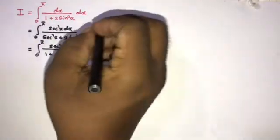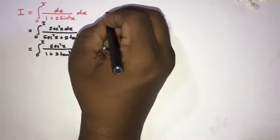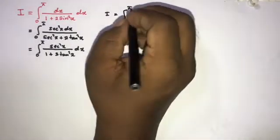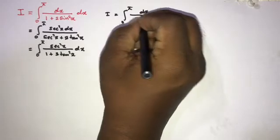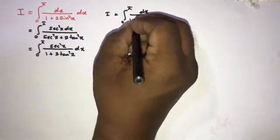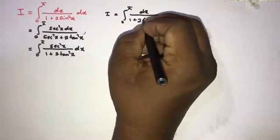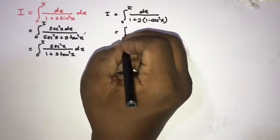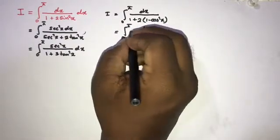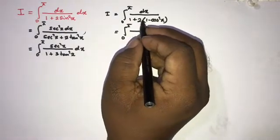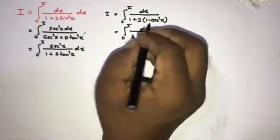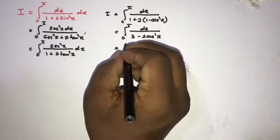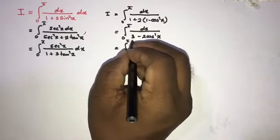We can also follow another approach. We write I equals the integral from 0 to π of dx over 1 plus 2 times sine squared of x, and substitute sine squared of x equals 1 minus cosine squared of x. Then we simplify to the integral from 0 to π of dx over 1 plus 2, which is 3, minus 2 times cosine squared of x.